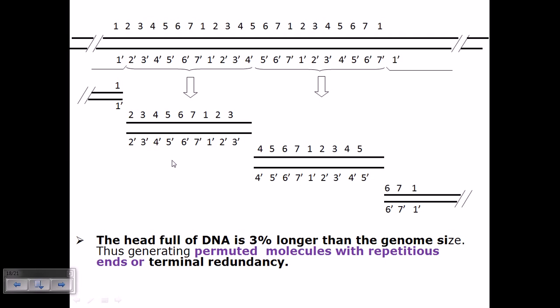The head full of DNA is three percent longer than the actual genome size. This is due to terminal redundancy, which is permuted molecules with repetitious ends in both directions. For that reason, three percent extra is packaged inside.